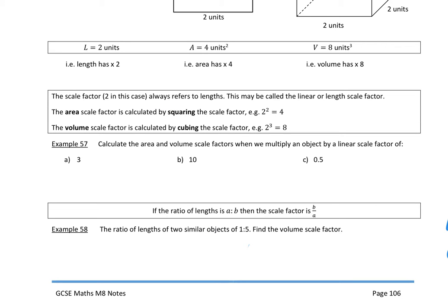The area scale factor is calculated by squaring the scale factor. The volume scale factor is calculated by cubing the scale factor.